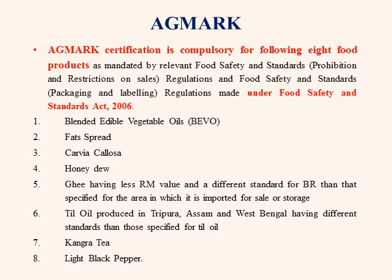The sixth compulsory product is til oil produced in Tripura, Assam and West Bengal. The seventh is Kangra tea, which is a tea mainly obtained from the Kangra district in Himachal Pradesh. The eighth and last is light black pepper.